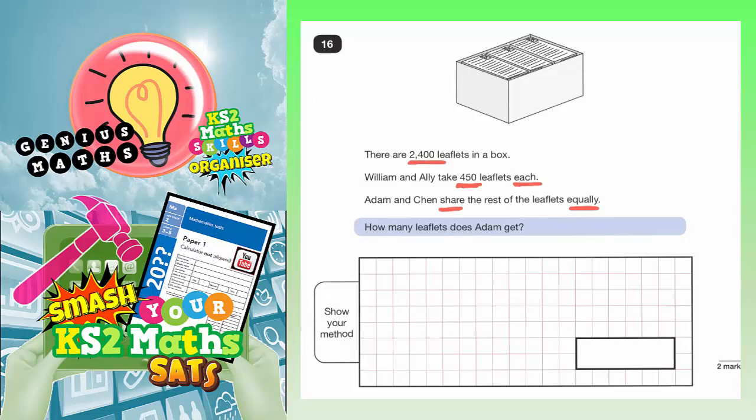I've underlined the key words there. What we need to do first of all is start with the fact that William and Ali take 450 each. Because that's each, that's 450 for William and another 450 for Ali. Will and Ali, that's going to be 450 for William plus another 450 for Ali.